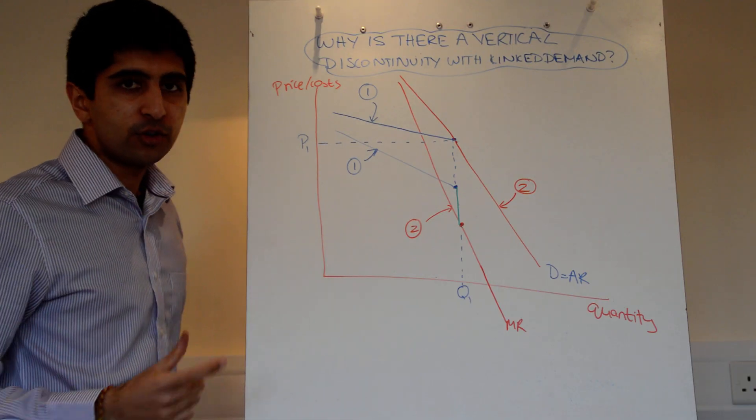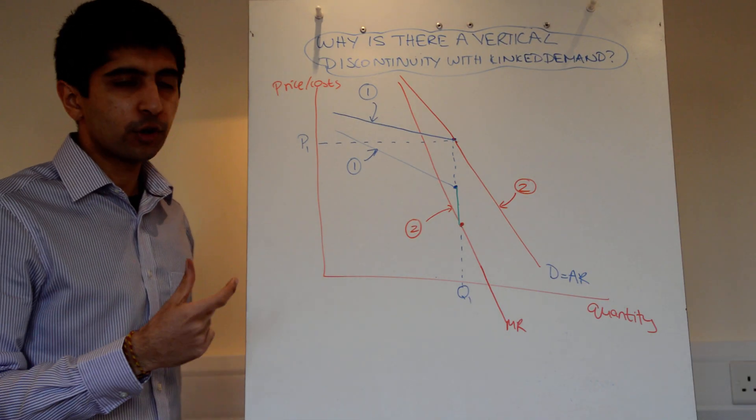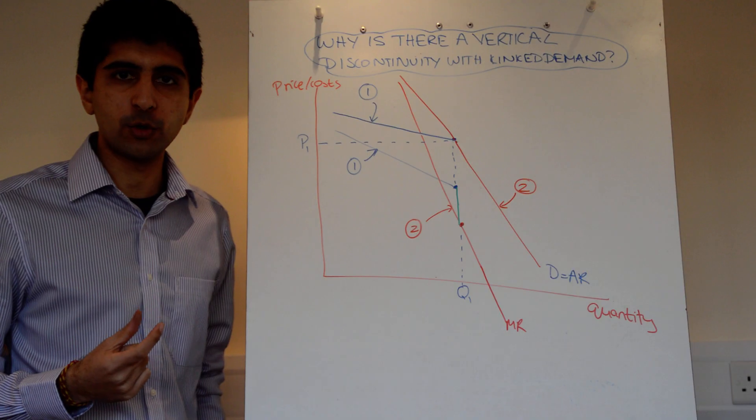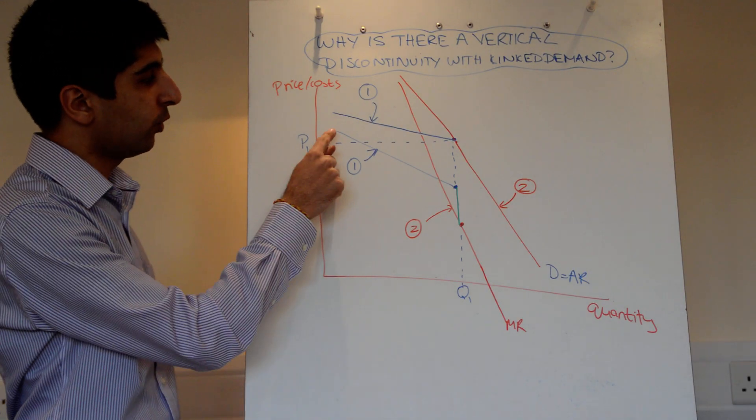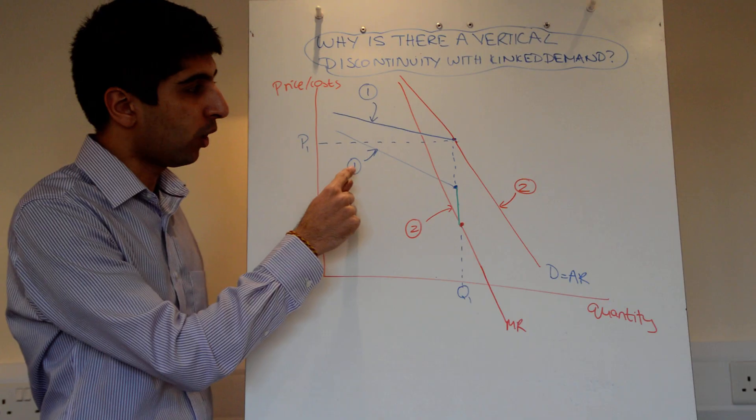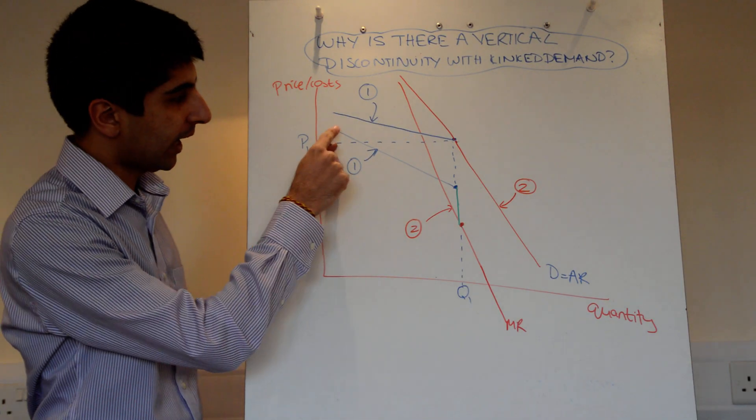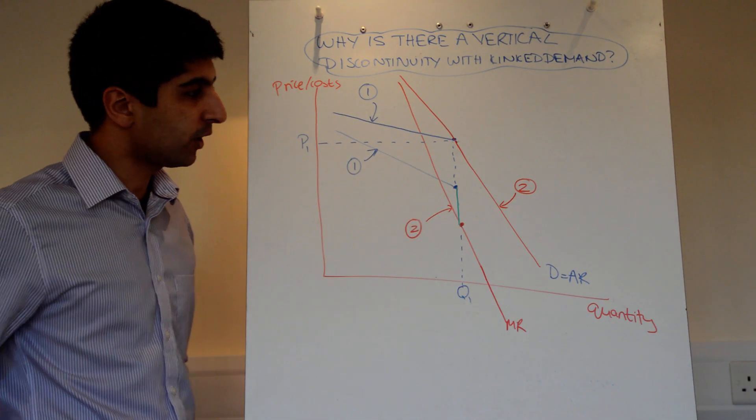And with those two demand curves, you've also got a corresponding marginal revenue curve, which is twice as steep. So I've drawn the marginal revenue curve for number one, so the first part of the demand curve down here, that's that marginal revenue curve.